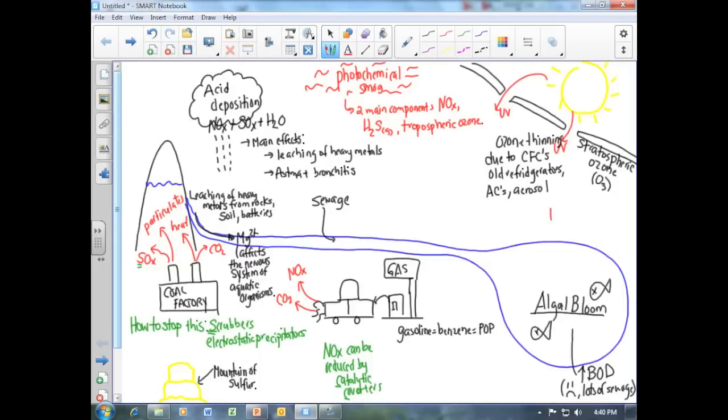Another environmental issue we studied in class is biomagnification or bioaccumulation. Biomagnification means that if we take a look at our food chain, the animals that are at the top of the food chain will have accumulated the most amount of toxins in their fat.